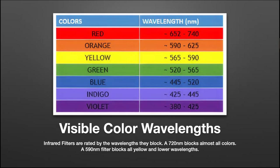The most common filters — and I'll be getting more into this later — the 720 nanometer blocks about half the red and everything else, and just allows the infrared through. Whereas a 590 filter, which is the second most popular one, leaves all the red and oranges and starts blocking from the yellows down all the way through violet. There are many more types of filters which we won't have time to get into tonight.